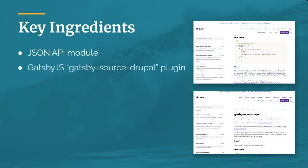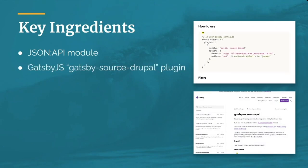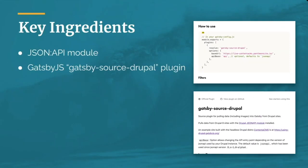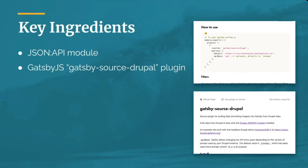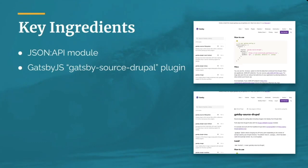The next thing you need to do in order to integrate with Gatsby JS is to add a source plugin that will connect the Gatsby application to the content being served by Drupal. Gatsby has a host of source plugins that connect to any number of data sources, including Drupal, WordPress, and many other platforms.